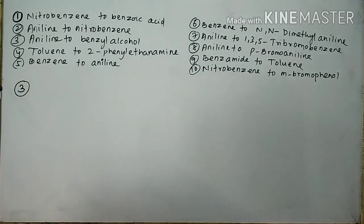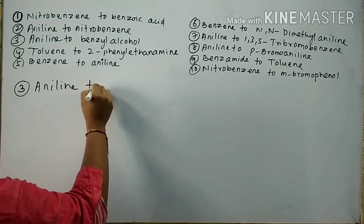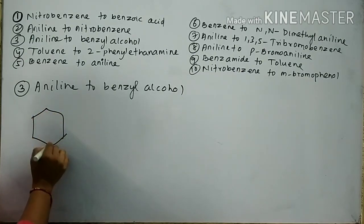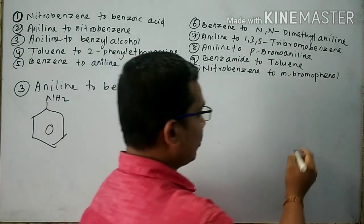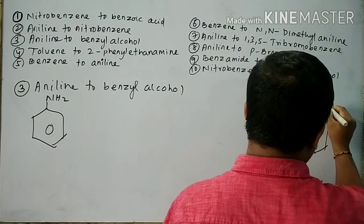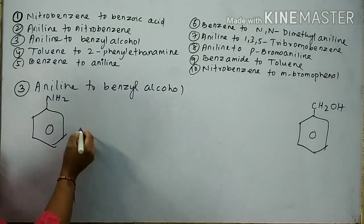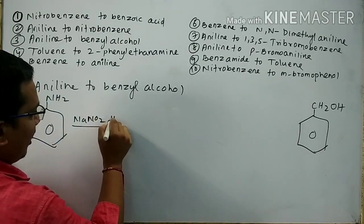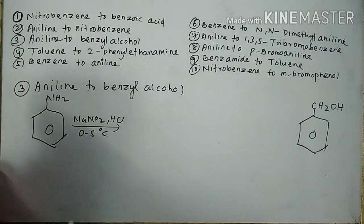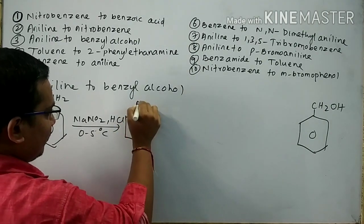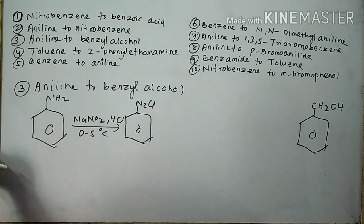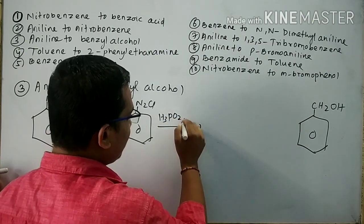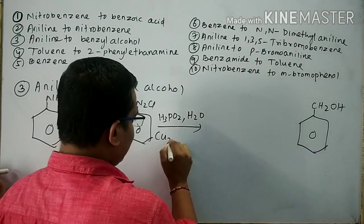Question number 3: Convert aniline to benzyl alcohol. First, aniline is converted into BDC by reacting with NaNO2 and HCl at 0 to 5 degrees centigrade. Then BDC is converted into benzene by reaction with H3PO2 and water in the presence of CuCl2, and then benzene reacts with methyl chloride in the presence of anhydrous AlCl3 to form methylbenzene (toluene).